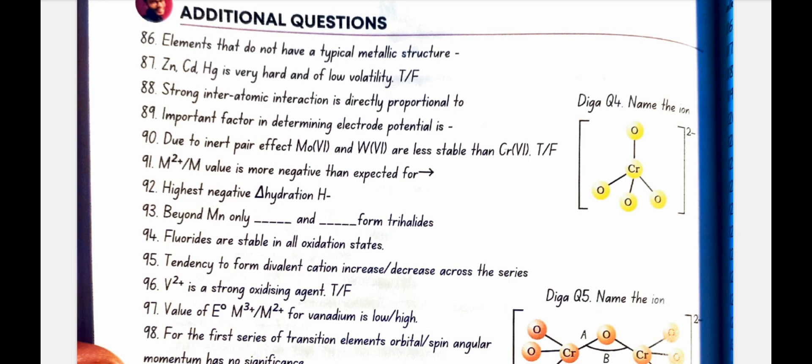V2 plus is a strong oxidizing agent. No false. Value of E naught M3 plus or M2 plus for vanadium is low.